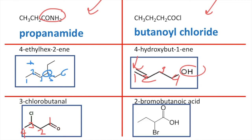The final one for this page is 2-bromobutanoic acid. First you draw butanoic acid — carbon number one is always where the carboxylic acid is — so that's one, two, three, four, and on carbon number two is where your bromine atom is.